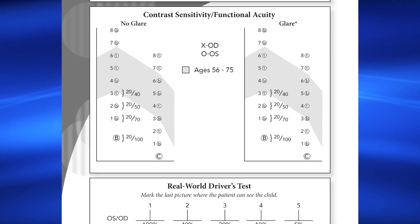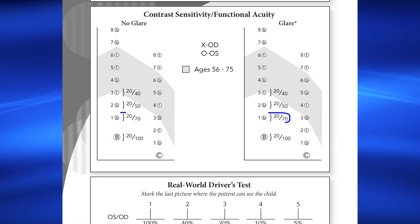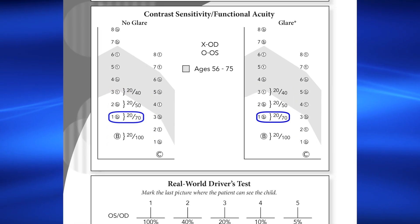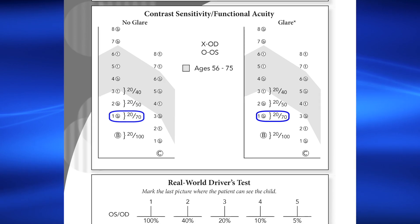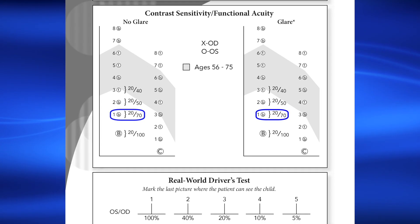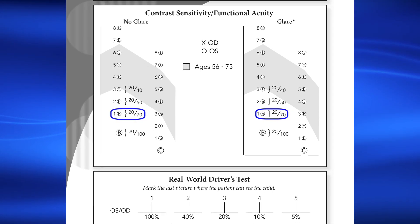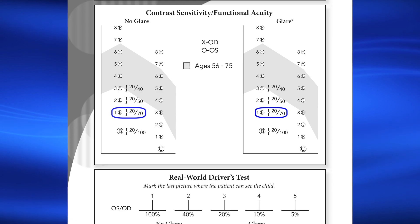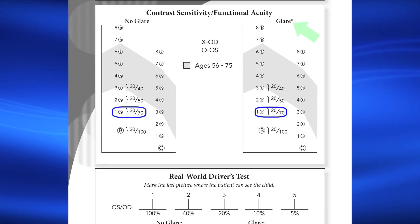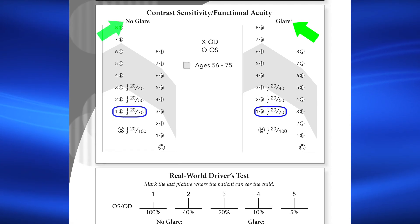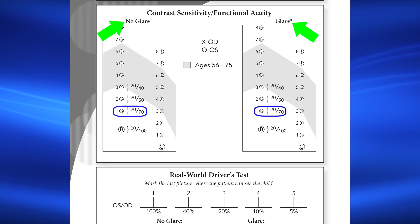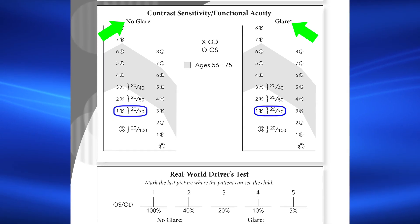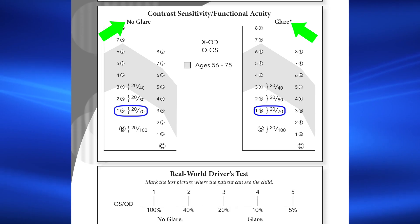For example, level B1 equates to 20/70 acuity. This is the functional acuity score for a patient who could see only up to contrast level B1. The functional acuity score should be recorded for both non-glare and glare test conditions.